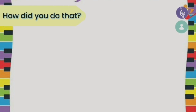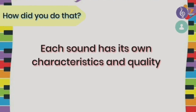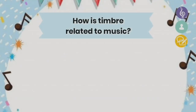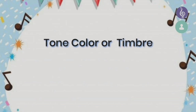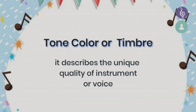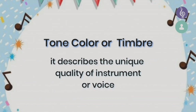But how did you do that? Each sound has its own characteristics and quality — it is called timbre. It helps us to recognize differences between sounds. Part of getting the most out of listening to music involves being able to hear as well as being able to identify voices and instruments by their tone color or timbre. Take note that they mean the same thing — it describes the unique quality of an instrument or voice.